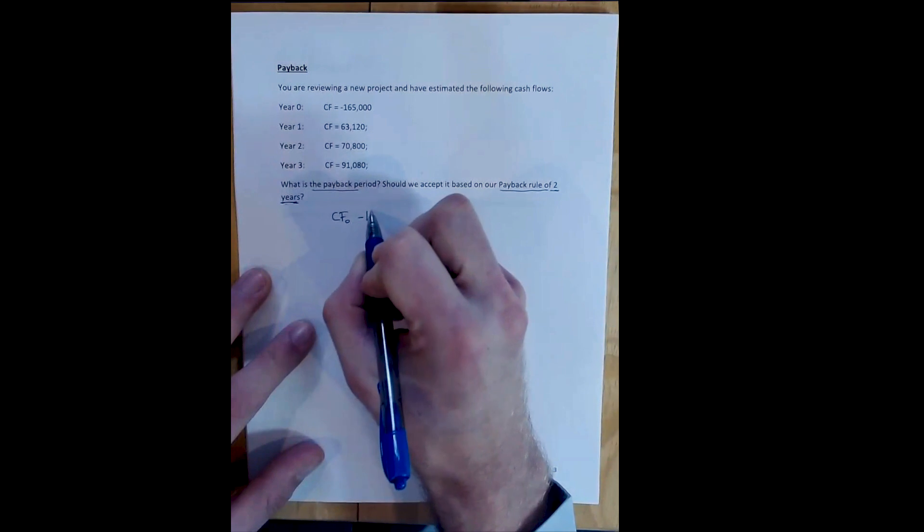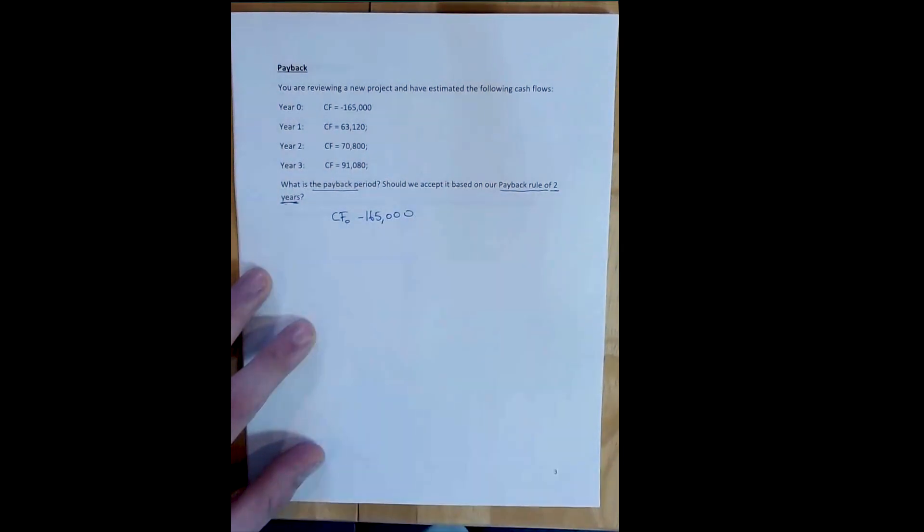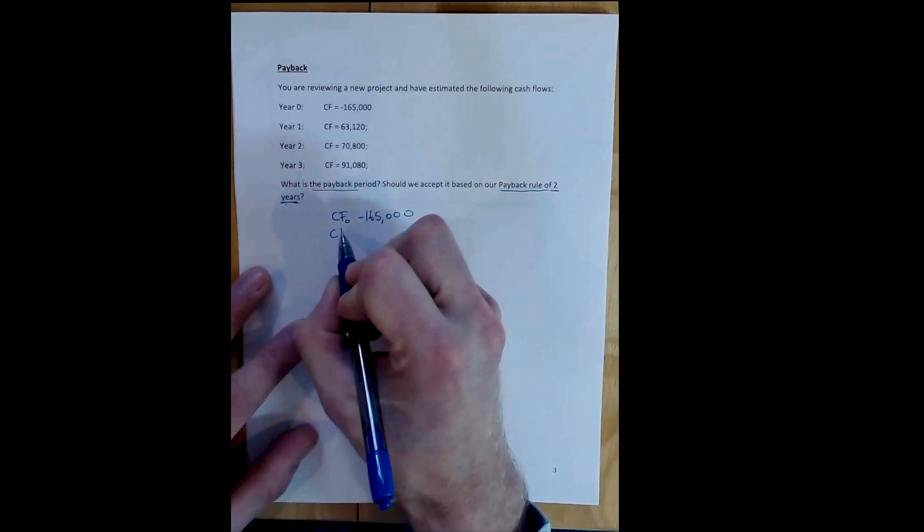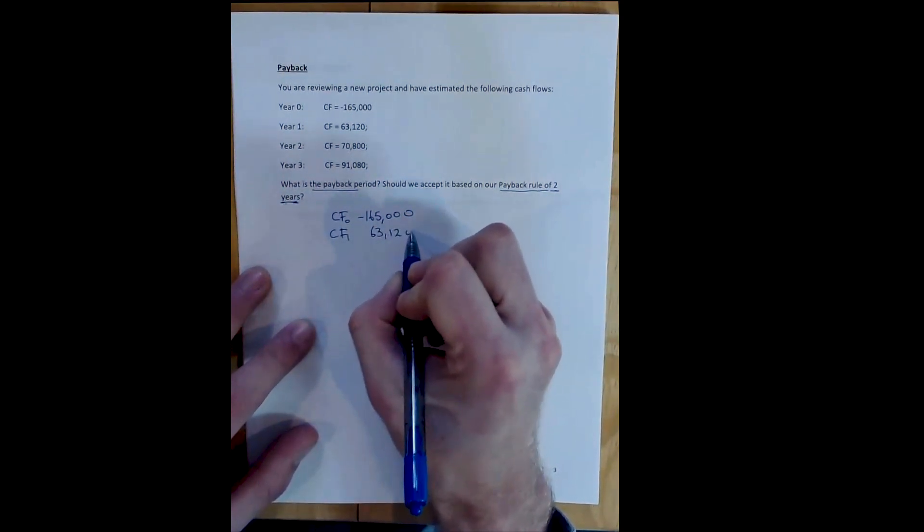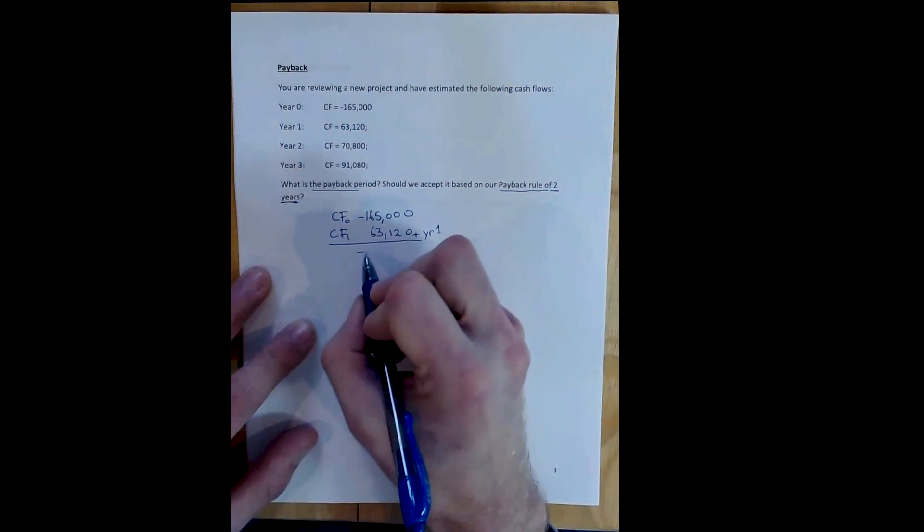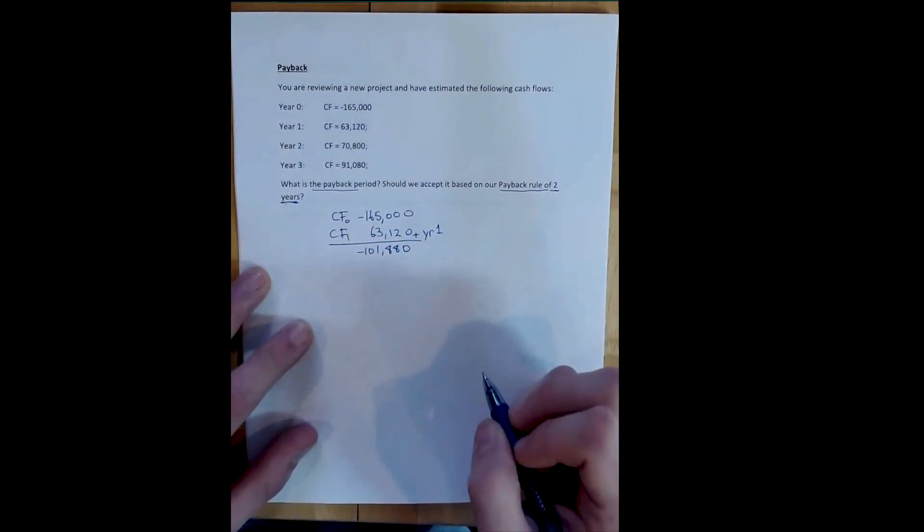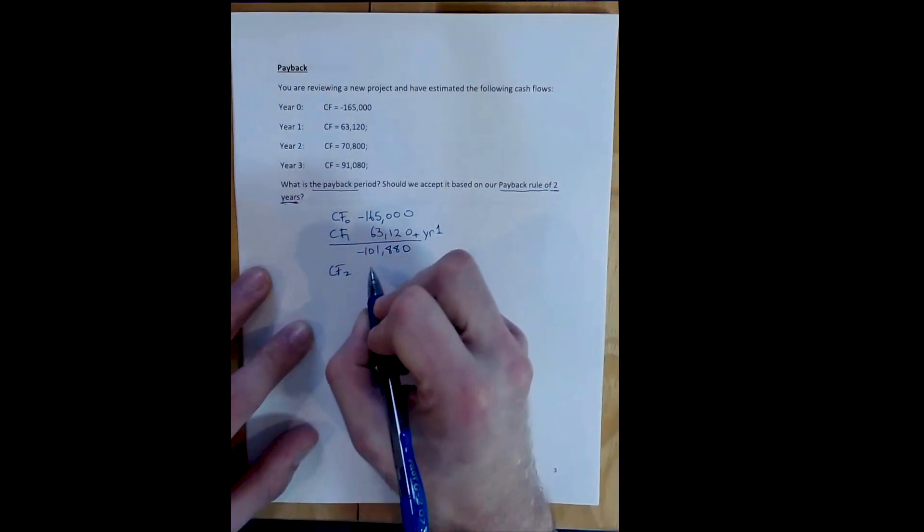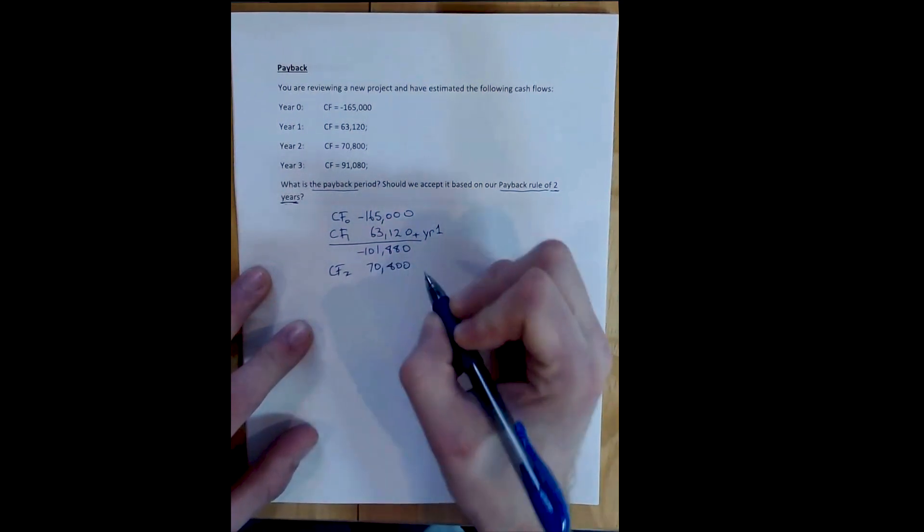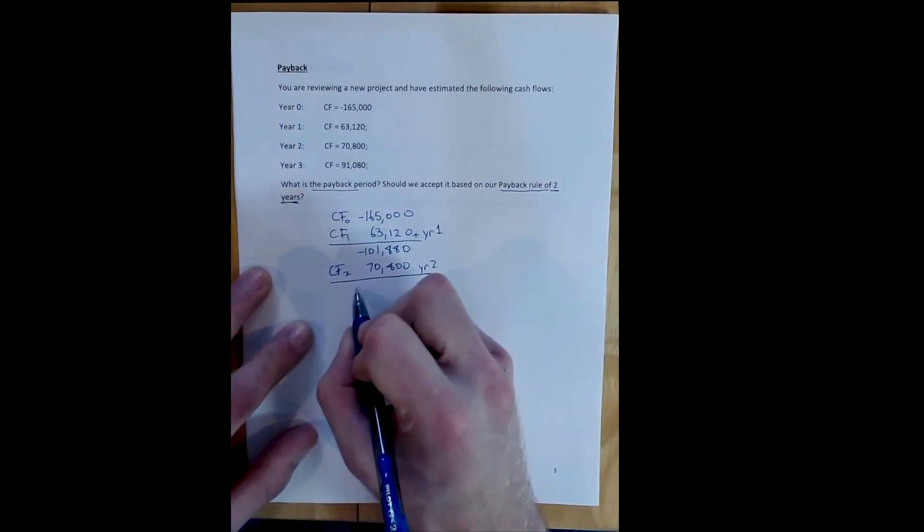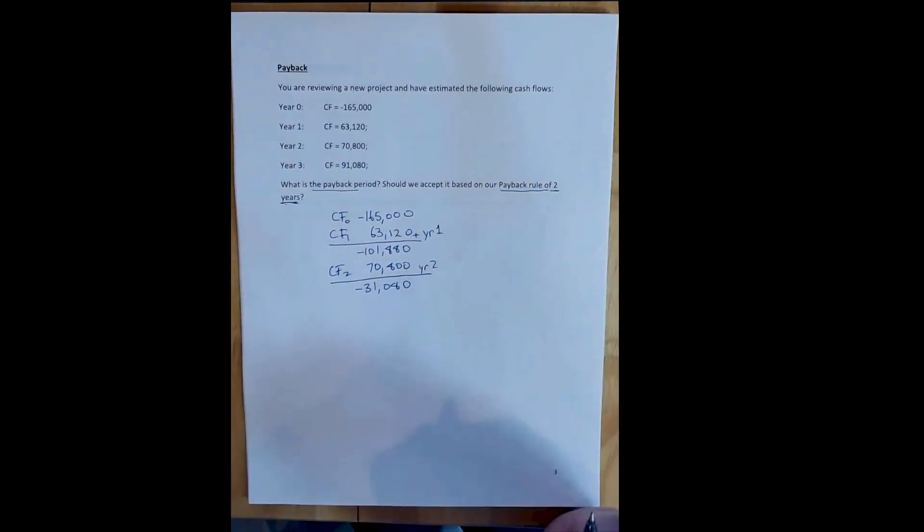Then add each year's positive cash flows until you get to zero. We add the first year's cash flow, which is $63,120. If we add this to the initial cost, we have paid back $63,120, but we still need to cover $101,880. So we haven't paid back on the project yet. We add the second year's cash flow - $70,800 - and we can see that we won't pay back here either. If I add those two values, I get negative $31,080, so I haven't paid back.